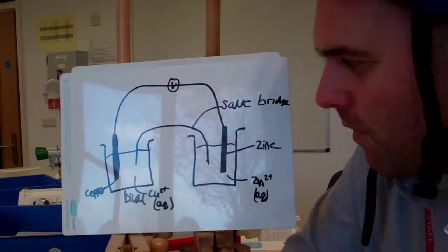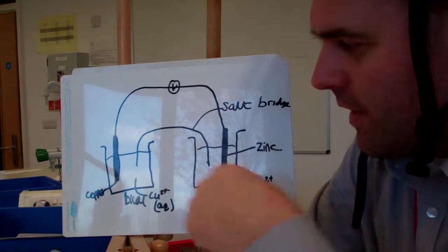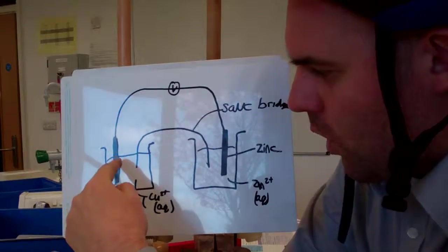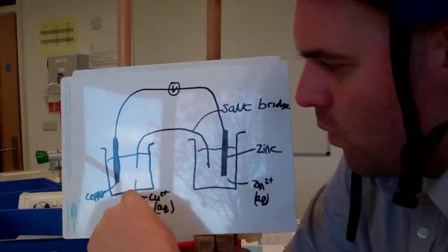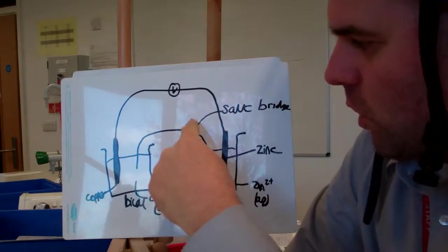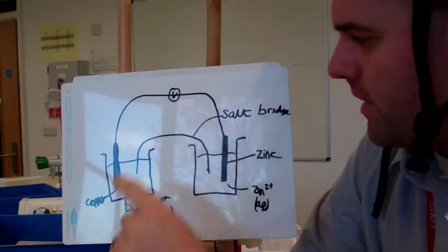Okay, so here we're looking at the setup of an electrochemical cell. These are two half cells. This one's got copper, and it would have copper 2 plus ions in 1 mol per dm³. Here we've got a salt bridge linking together and a voltmeter up here.